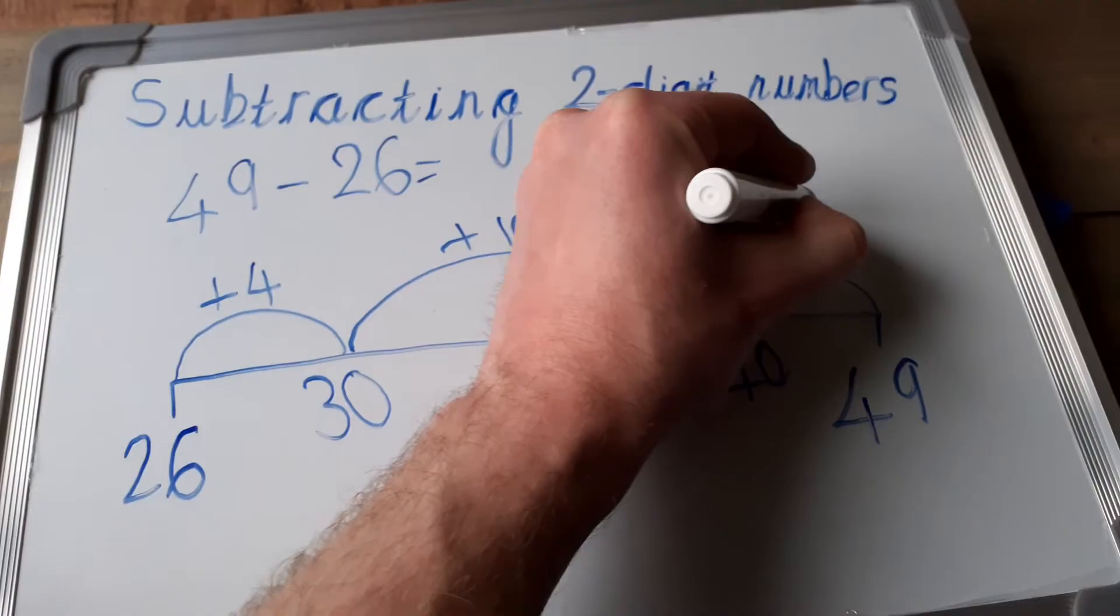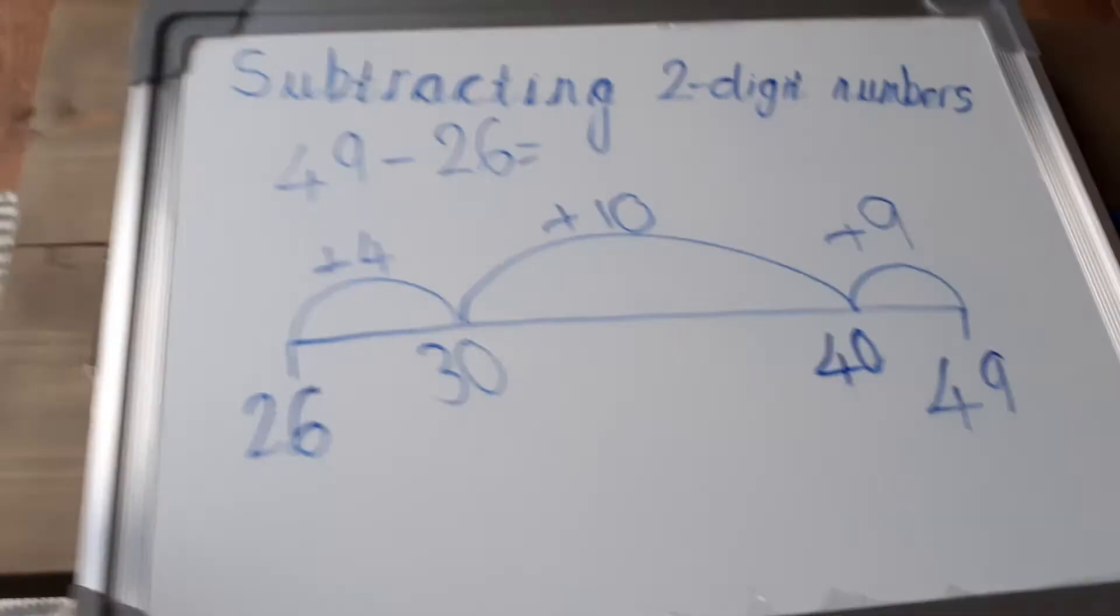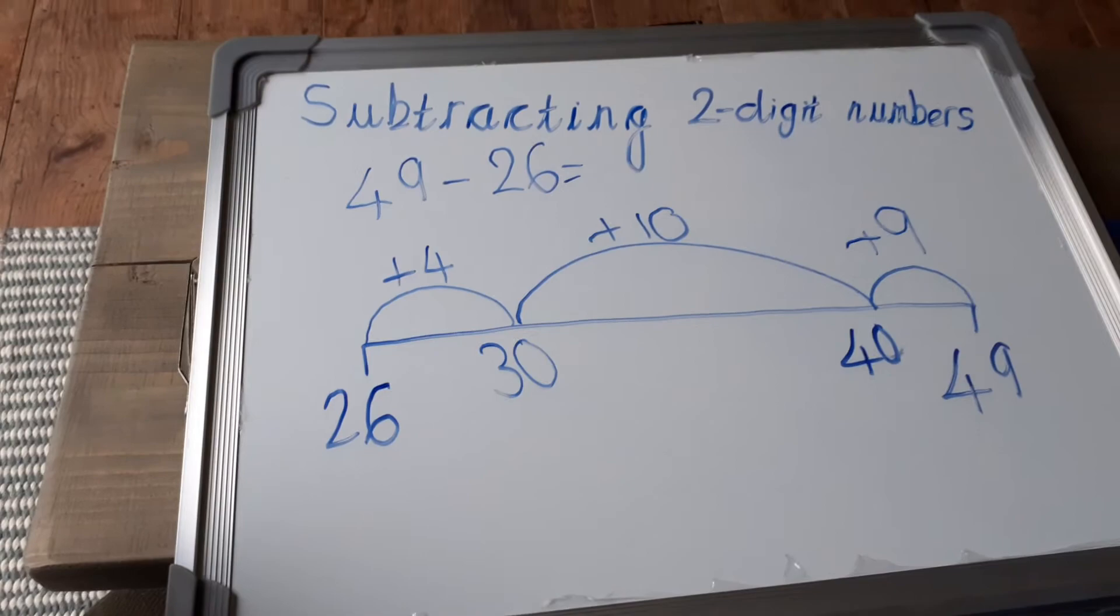Okay. And the final step is to add those three numbers together. So let's start with our big number, which is 10. If we add 10 and 9 together, think about the place value again. 10 plus 9 is 19, isn't it?